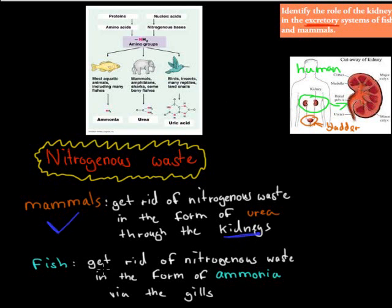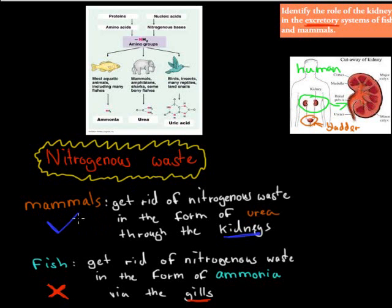For fish, they get rid of nitrogenous waste in the form of ammonia via the gills — not the kidney. Fish do not use the kidneys to get rid of nitrogenous waste; they remove it through their gills. The reason we can't remove it through gills is because we don't have gills, we don't have water, and we don't live in a water environment. So we need to use the kidneys to get rid of nitrogenous waste in the form of urea — that's only for mammals, not fish.